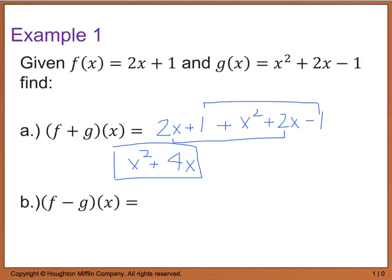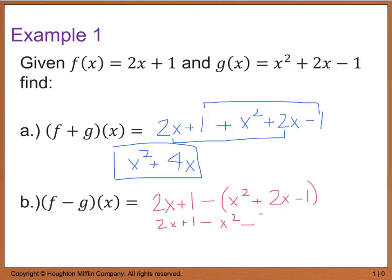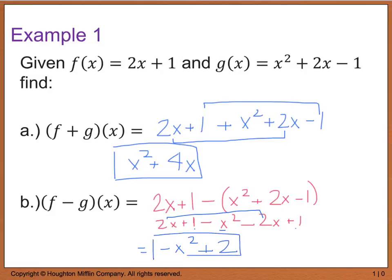Likewise, if I subtract, I have f minus g, so I'm going to take my f function, which is 2x plus 1, and subtract — putting this in parentheses so I remember to distribute that negative — x squared plus 2x minus 1. When we simplify, we get 2x plus 1 minus x squared minus 2x plus 1. Then 2x minus 2x gives me 0x, I have a negative x squared, and 1 plus 1 gives a positive 2. So we end up with negative x squared plus 2.